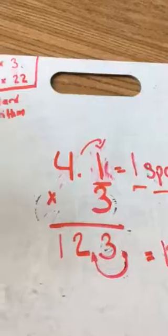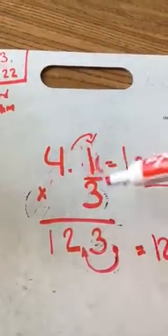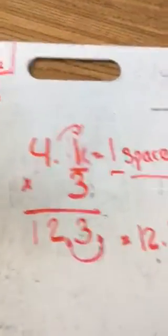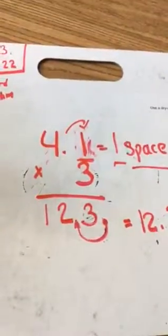And if we think about it, if this is a reasonable answer, we can cover up that 0.1. What's 4 times 3? 12. So we know 12.3 is a very reasonable answer.